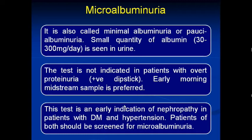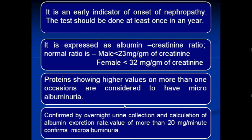This test is an early indication of nephropathy in patients with diabetes mellitus and hypertension. Patients with both conditions should be screened for microalbuminuria, and it is an early indicator of the onset of nephropathy. The test should be done at least once a year. It is expressed as albumin-creatinine ratio: normal is less than 23 mg per gram creatinine in males and less than 32 mg per gram creatinine in females. Higher values on more than one occasion confirm microalbuminuria.